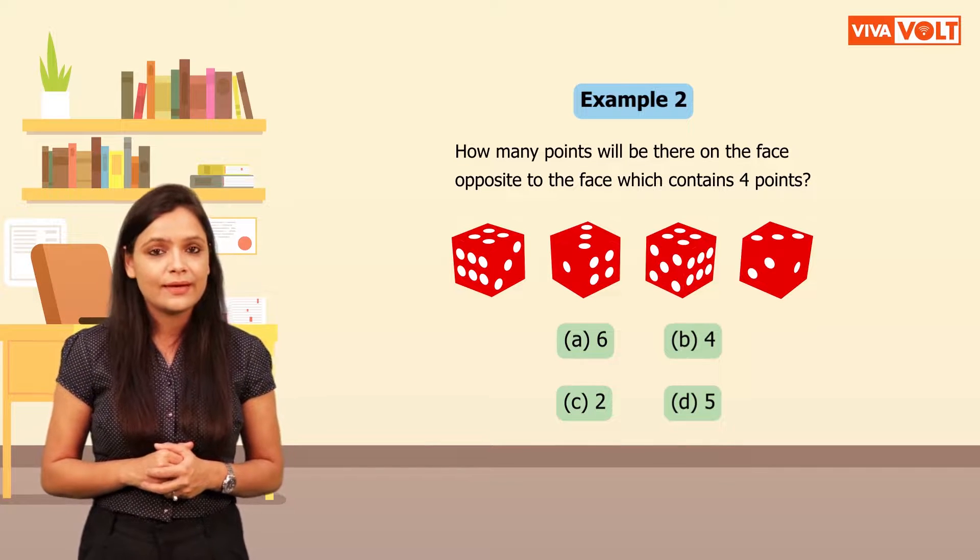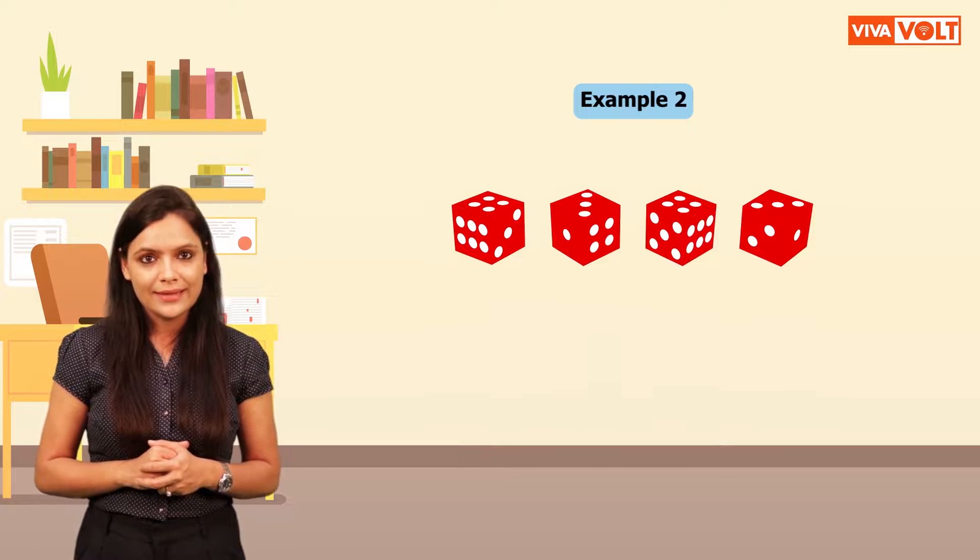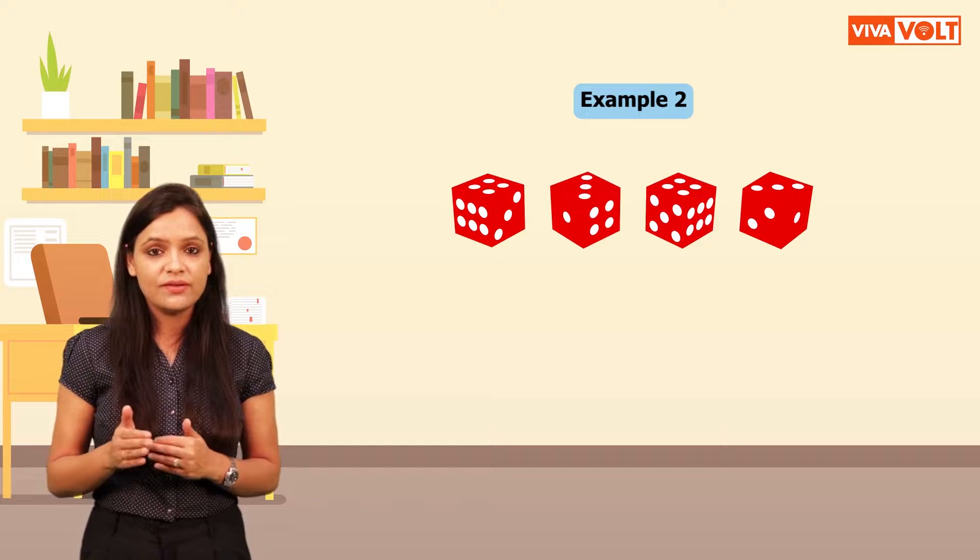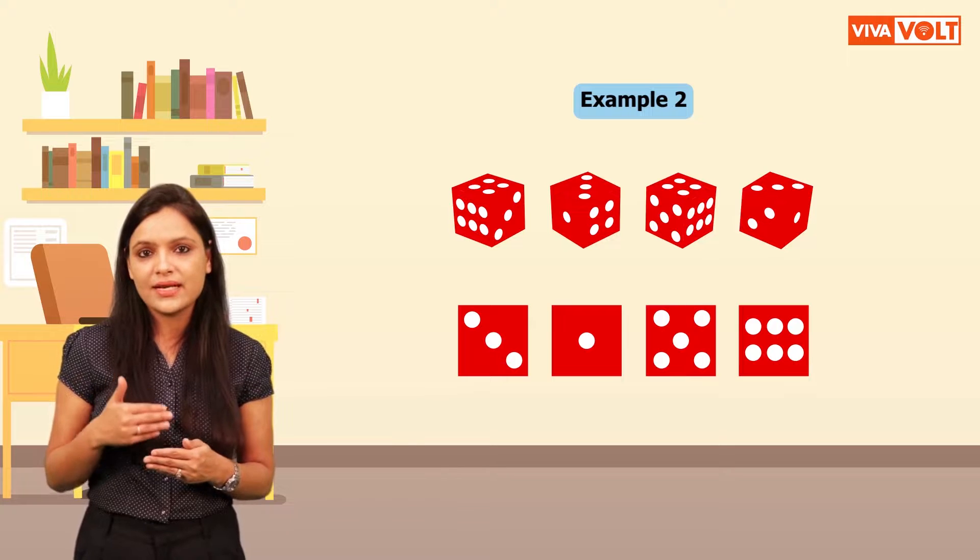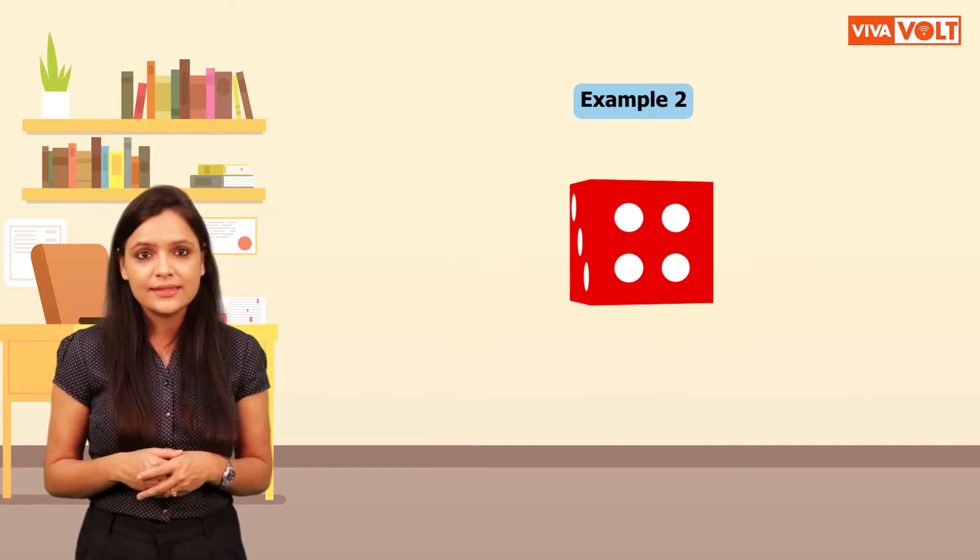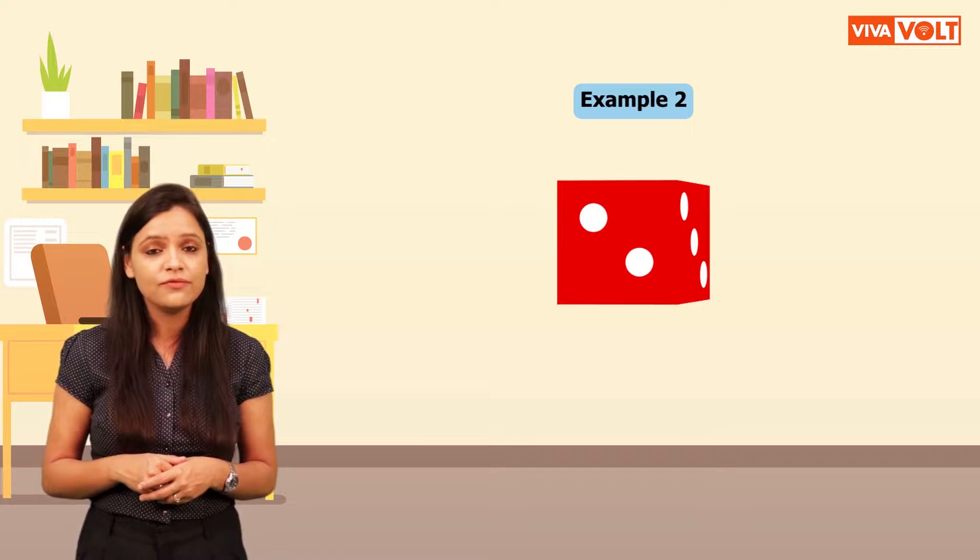Children, the correct answer is option C, 2. As the adjacent faces to the face with 4 points have 3, 1, 5 and 6 points. Hence, the face opposite to the face containing 4 points will consist of 2 points.